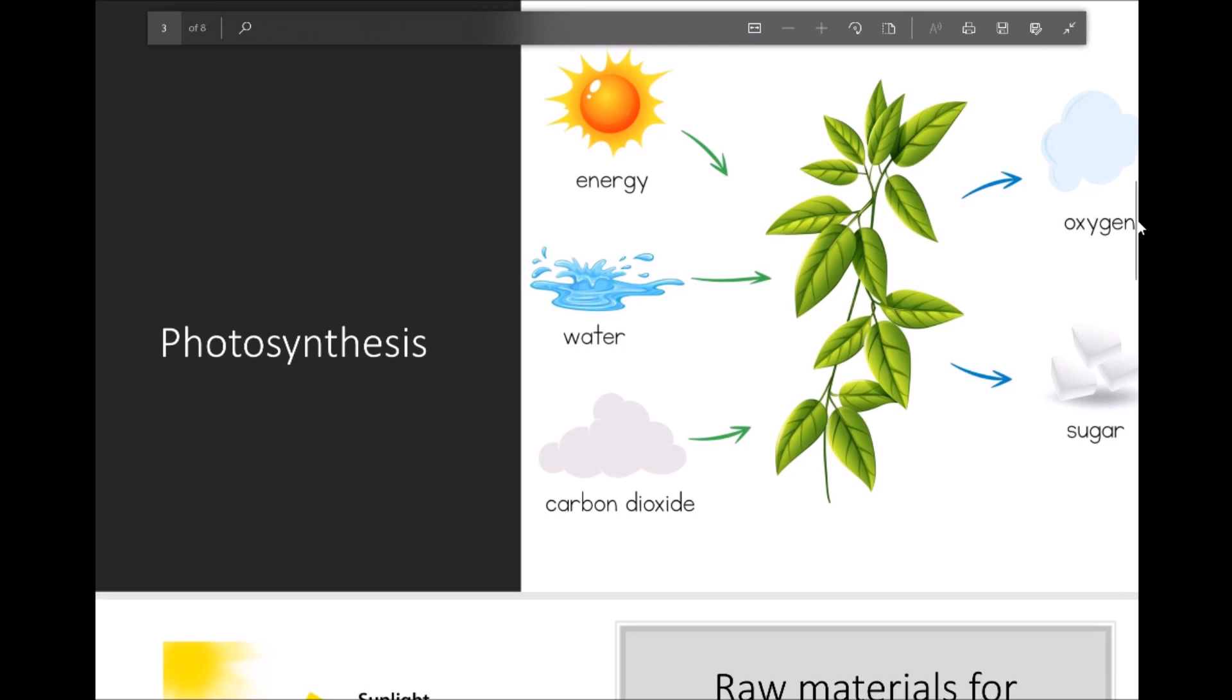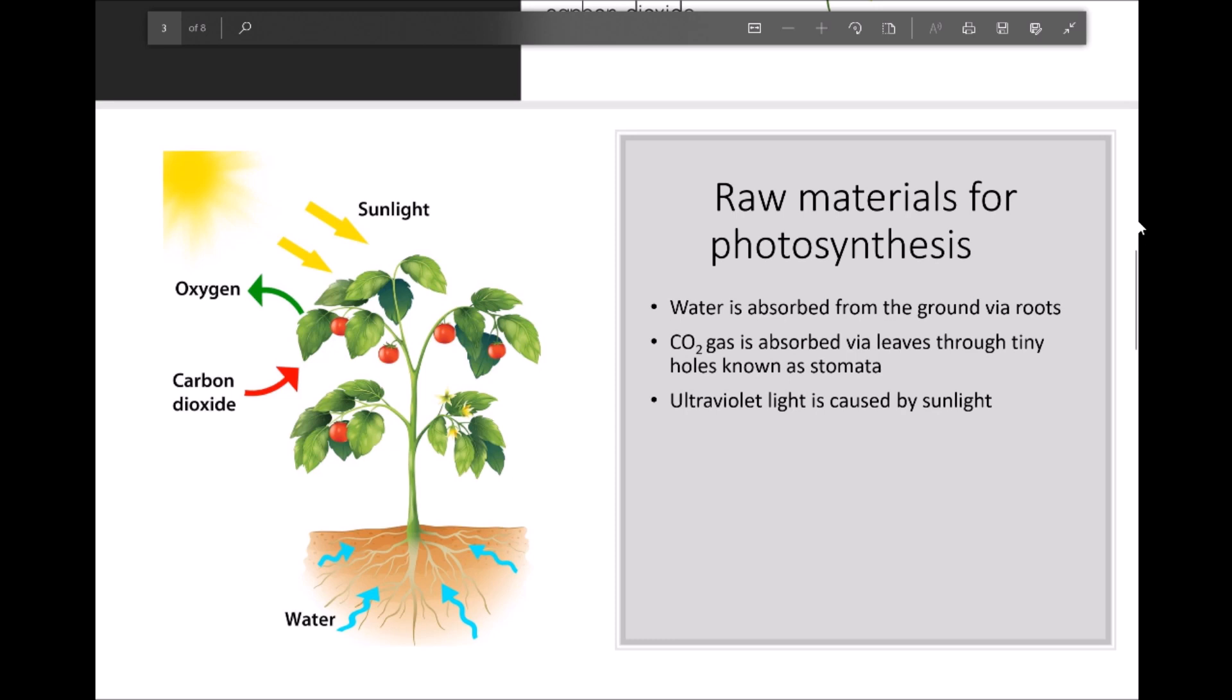The raw materials for photosynthesis are produced via - water is absorbed from the ground via roots, carbon dioxide gas is absorbed through tiny holes in its leaves known as stomata, and light is caused by sunlight.